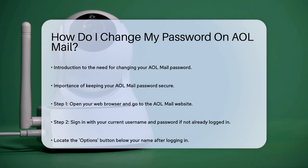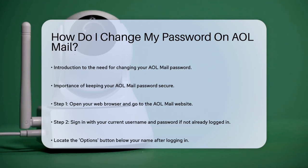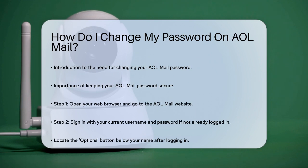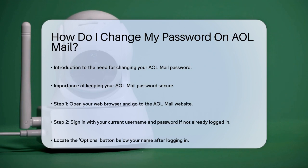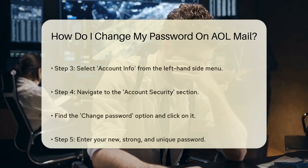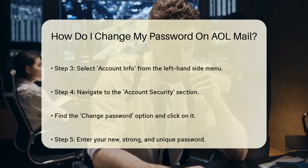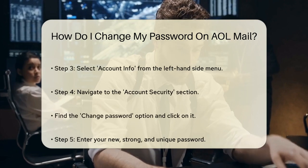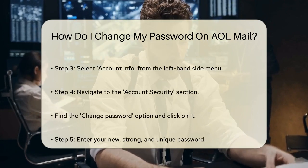First, open your web browser and navigate to the AOL Mail website. If you're not already logged in, sign in to your AOL account using your current username and password. Once you're logged in, look for the Options button, usually located right below your name. Click on this button and then select Account Info from the left-hand side menu.